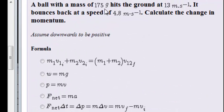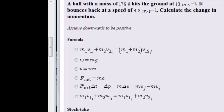A ball with a mass of 175 grams hits the ground at 13 meters per second, and then it bounces back at a speed of 4.8 meters per second. Calculate the change in the momentum.